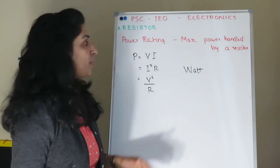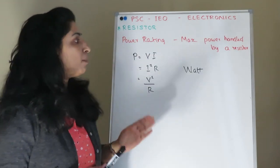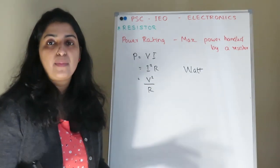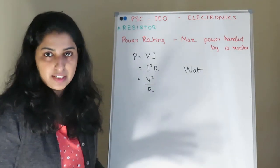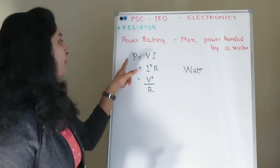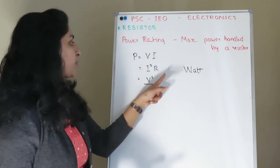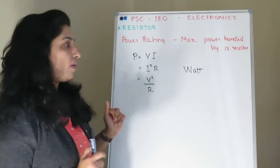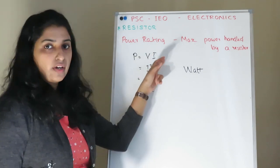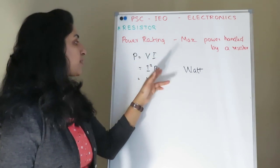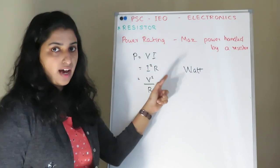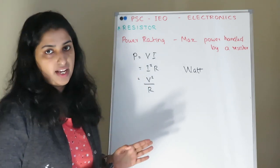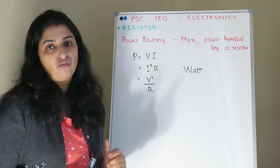Power rating is the maximum power that can be handled by a resistor. The power equations are: P equals V into I, P equals I squared times R, and P equals V squared divided by R. The unit of power is the watt.